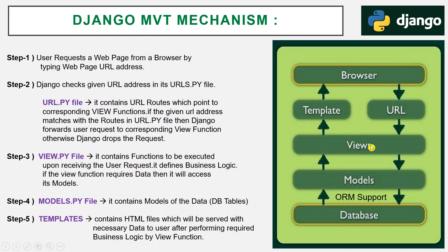If that request needs some data to be displayed in the web page, the view function will access the model layer. The model layer contains database models, designed in Python itself — simply class files. The model then contacts the database, which can be MySQL, Oracle, NoSQL, or PostgreSQL — any database can be used here.